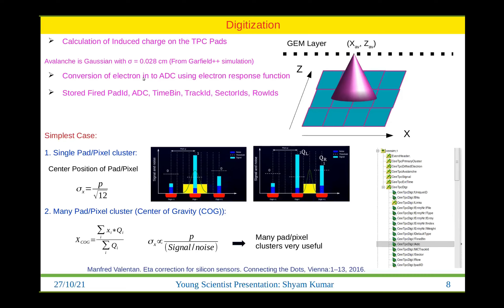We convert the number of electrons into a pulse using the single pad response function, converting to ADC units. Finally we store the fired pad ID, the total charge on the fired pads, and the time, which is used for the y coordinate.